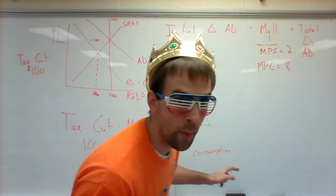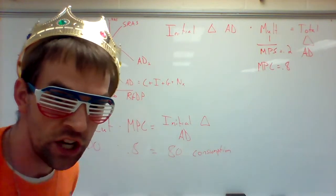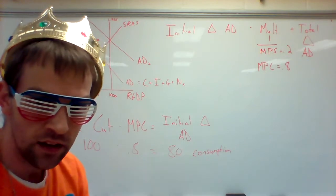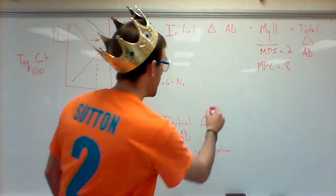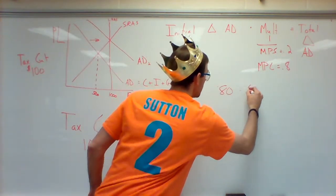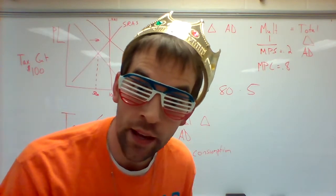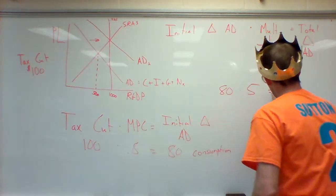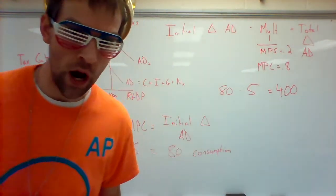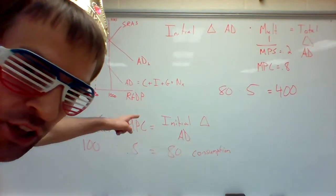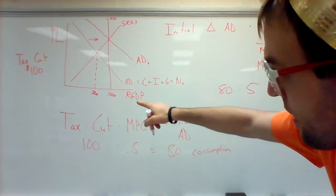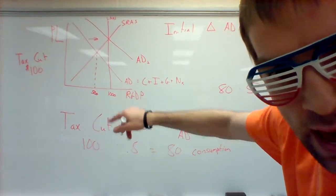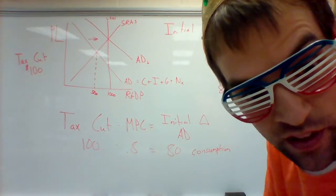So now we go back to the formula we used before. Initial change is 80. The multiplier is still going to be the same. We haven't changed anything there. So we'll go 80 times 5. You should notice our answer now is 400 bucks. But if you see on the graph, we had a recessionary gap of 500 that we closed in the last video.